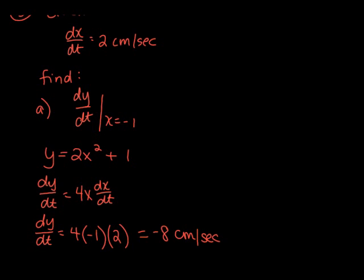If we kind of visualize the picture of that graph as a parabola, at the moment that we have a point at x = -1, the rate of change of x is 2 centimeters per second. The y value at that particular moment, dy/dt, so the change in y with respect to time at that particular moment is -8 centimeters per second.